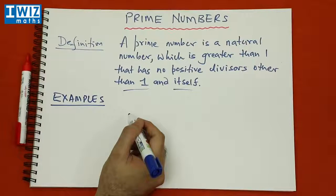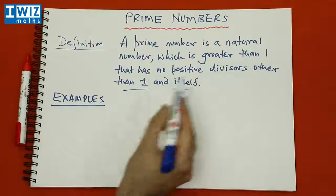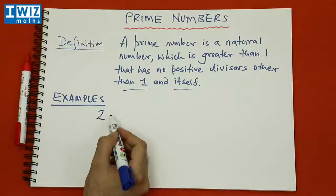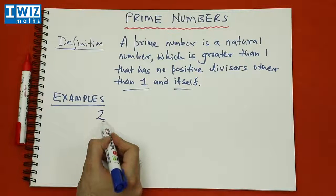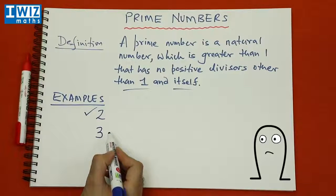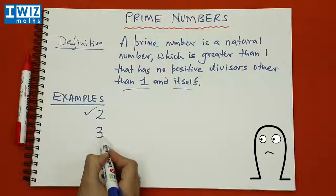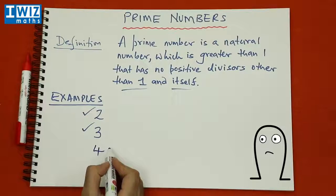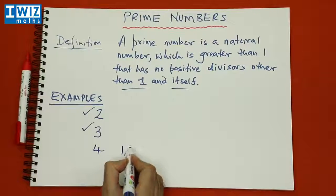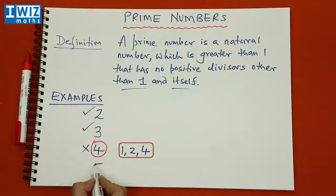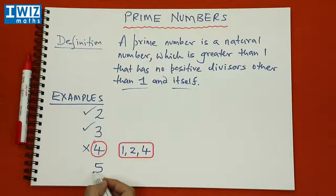We have to consider natural numbers greater than one, so we start by considering two. The only natural numbers dividing two are one and two, so two is a prime number. If we consider three, the only natural numbers dividing it are one and three, so three is a prime number. If we consider four, the divisors are one, two, and four, so four is not a prime number. If we consider five, the natural numbers dividing it are one and five only, so five is a prime number.